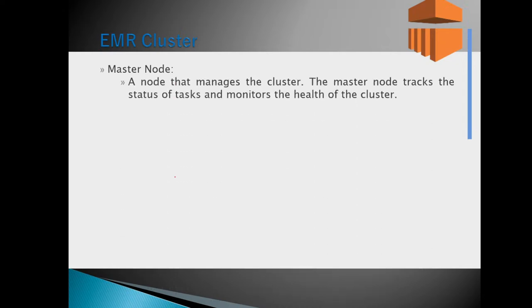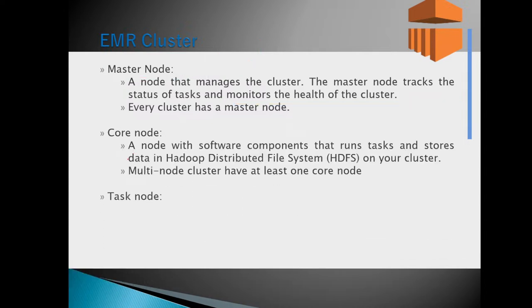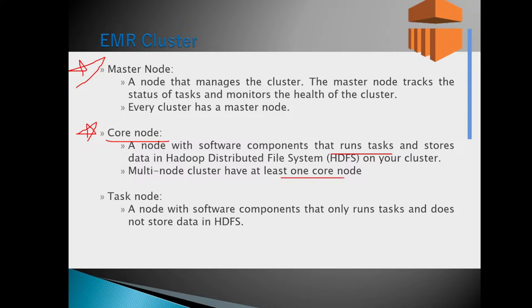There are three node types in an EMR cluster. The master node manages the cluster, tracks task status, and monitors cluster health — every cluster has one. The core node runs tasks and stores data in the Hadoop file system; it is the worker and heart of the cluster. The task node is optional — it only runs tasks and does not store data.